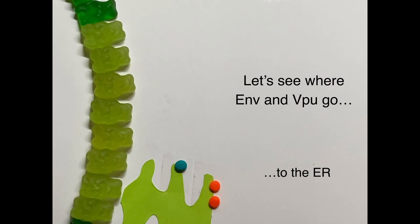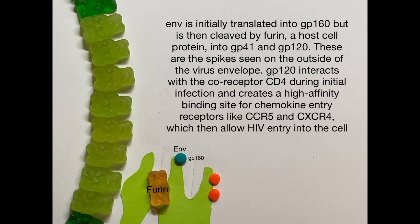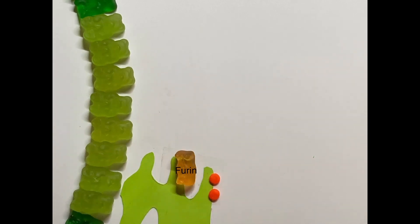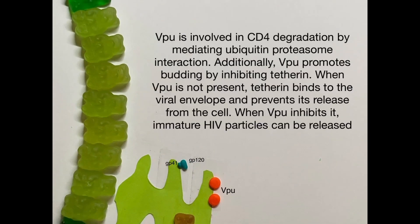ENV and VPU go to the ER. ENV is initially translated as glycoprotein 160, then cleaved by furin (a host cell protein) into GP41 and GP120 — the spikes seen on the outside of the virus envelope. GP120 interacts with CD4 during initial infection and creates a high-affinity binding site for chemokine entry receptors like CCR5 and CXCR4, allowing HIV entry into the cell. VPU mediates CD4 degradation via ubiquitin-proteasome interaction to help prevent superinfection, and also promotes budding by inhibiting tetherin, which would otherwise bind the viral envelope and prevent its release. ENV and VPU are eventually processed and reach the plasma membrane.